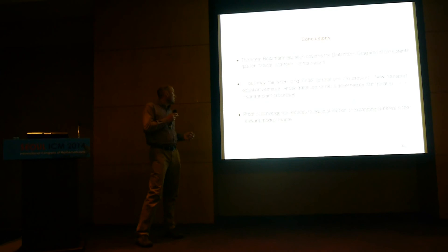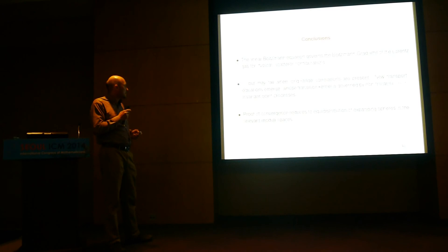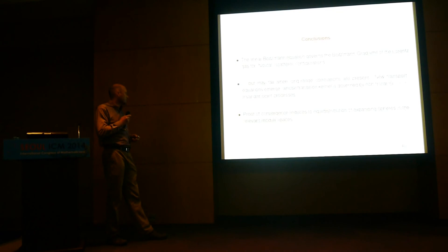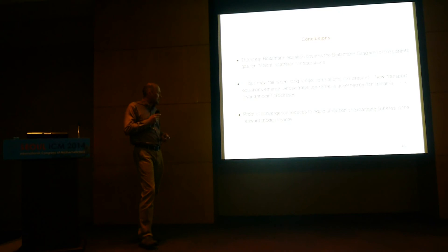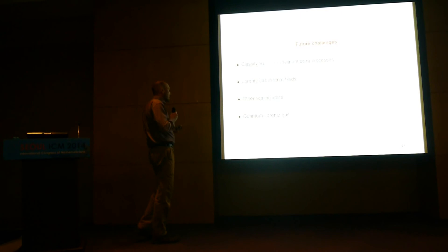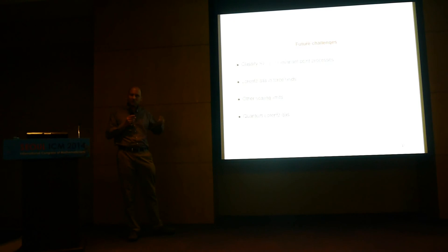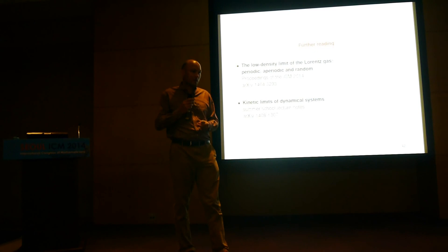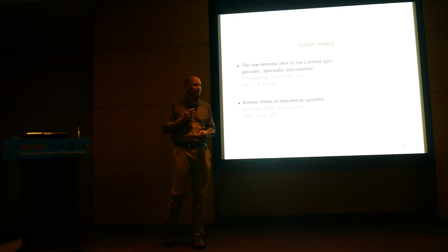In conclusion, the linear Boltzmann equation governs the Boltzmann-Grad limit of the Lorentz gas for typical scatterer configurations, but it fails when you have certain long-range correlations, and I've shown you three examples where this can be established. The way we prove this is by reducing the question to equidistribution in appropriate moduli spaces. Future challenges include understanding for a general point configuration P whether we can push this whole program through and find the corresponding SL_d(R)-invariant limit processes, the Lorentz gas in force fields, other scaling limits, and of course the quantum version. My time's up. I would like to thank the organizers for inviting me — great venue and a great conference — and a particular thank you from me to our Korean hosts.